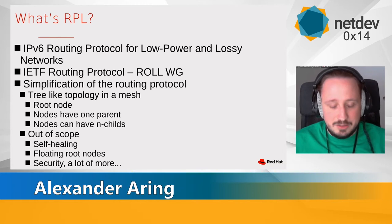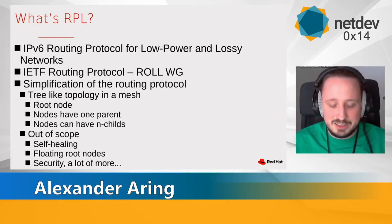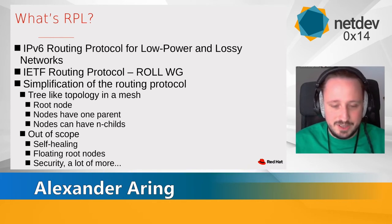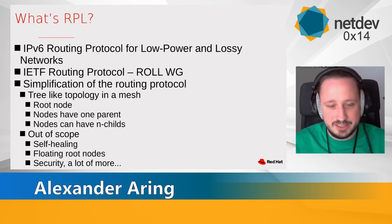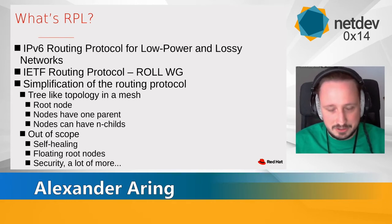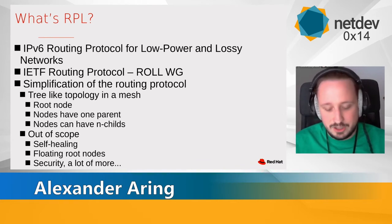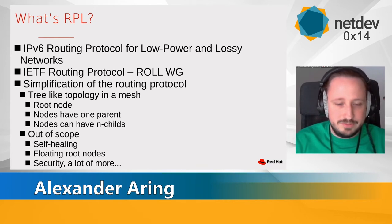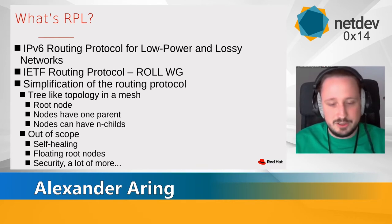We make a simplification of the protocol. It has a tree-like topology with a root node, and the nodes in this topology have only one parent, and nodes can have N children. There are a lot of out-of-scope things not handled in this presentation — like self-healing of the routing protocol, floating root nodes where a node can switch to become the root, or multiple root nodes.